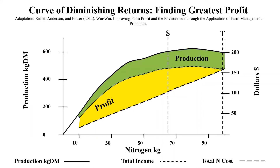In fact farmers make much more money earlier — at point R — where additional costs for every kg of nitrogen equals additional income created. Up to this point at 42 kg of nitrogen, every kg of nitrogen is making more money than it costs, whereas after this point it's costing more money than it makes, steadily eroding previous profit gains.